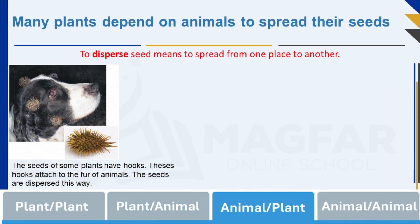Seed dispersal is like a cool adventure for seeds. To disperse seed means to spread from one place to another. Plants have different ways to send their seeds on exciting journeys. Many plants depend on animals to disperse their seeds. The seeds of some plants have hooks that attach to the fur of animals. Seeds, like hitchhikers, stick to animals' fur or feathers and get carried to new spots, finding new homes.